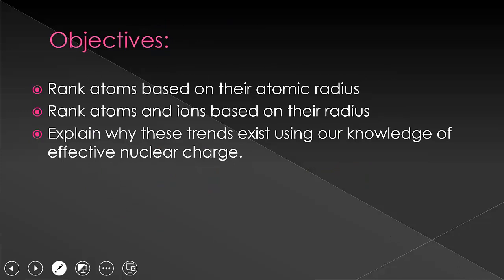So now we can rank atoms based on their atomic radius, and their ions based on their ionic radius. We can also explain why these exist using arguments of effective nuclear charge, penetration, and shielding.